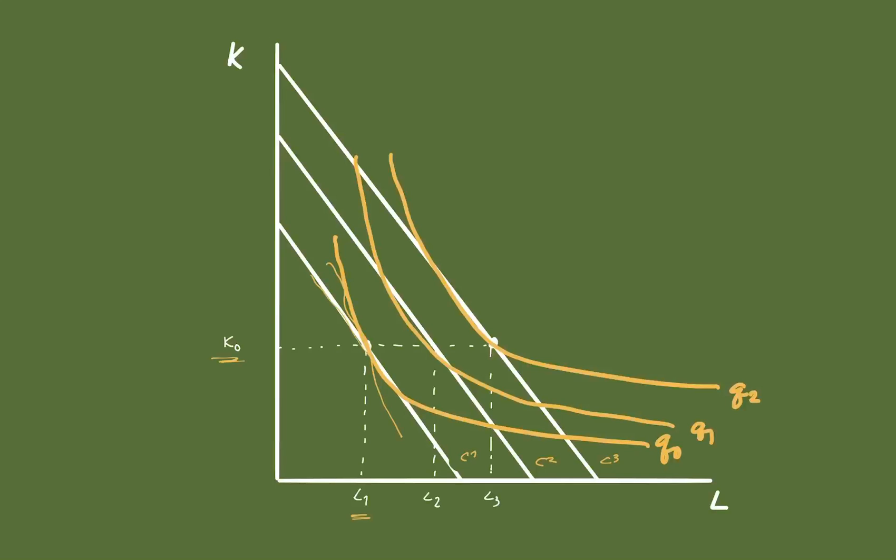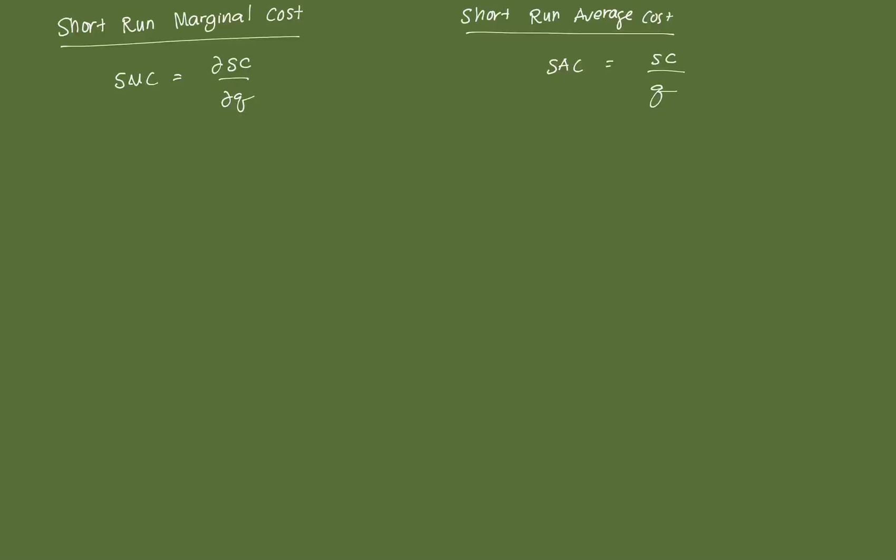Similarly to our previous cost functions, we also have the marginal and the average cost. Computing for them in the short run is straightforward. Our short run marginal cost is the first order partial derivative of the short run cost function with respect to Q. We also have a short run average cost, which is your total short run cost divided by Q. In the next video, we're going to combine all of these concepts together and derive the relationship between the short run cost.